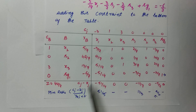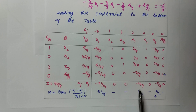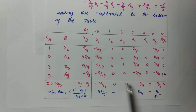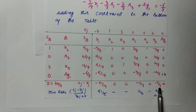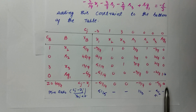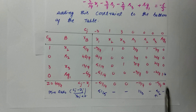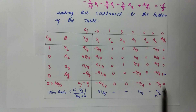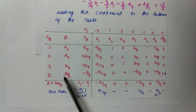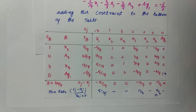Dividing cj − zj by −5/14, −3/7, and −2/7 respectively, I compute the ratios. For s3: −5/7 divided by −2/7 gives a value strictly greater than 0, so I note the ratios. The minimum ratio among valid entries is 5/2, corresponding to variable s3. Therefore s3 enters the basis and sg1 leaves the basis. If you want to watch the dual simplex method in detail, I have provided a link in the description.